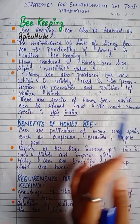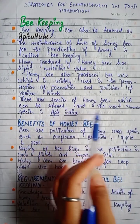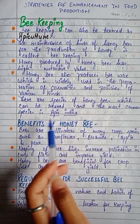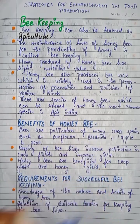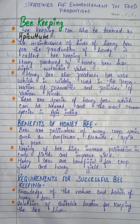There are species of honey bee which can be reared. The most common species is Apis indica. There are many honey bee species, and among them the most common species is Apis indica.